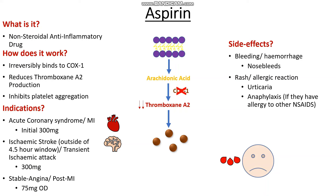In young children, aspirin should be avoided, especially if they've had a recent viral infection, as it may lead to a condition known as Reye's syndrome — essentially when, following a viral infection, aspirin damages the mitochondria, leading to brain damage, heart damage, and liver damage as well. So it's a very serious condition. In children, aspirin should only be used in indicated cases such as Kawasaki's disease.